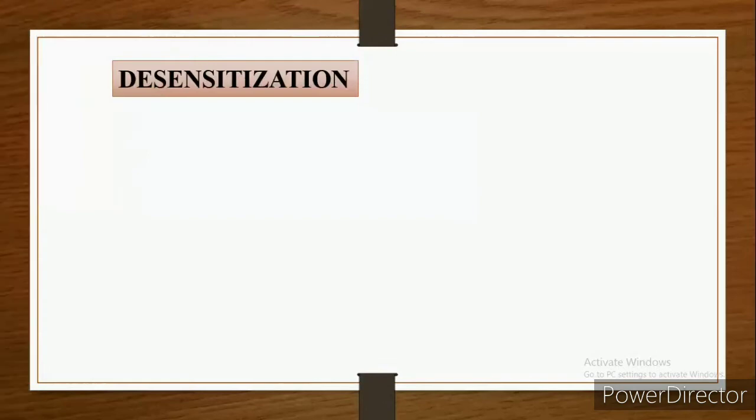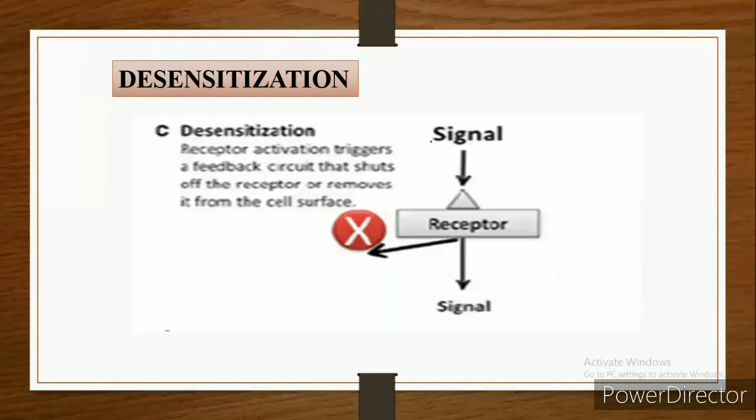Next, desensitization. Desensitization is also called adaptation. When a signal molecule is continuously present on the receptor, this receptor activation triggers a feedback circuit that shuts off the receptor and removes it from the cell surface.